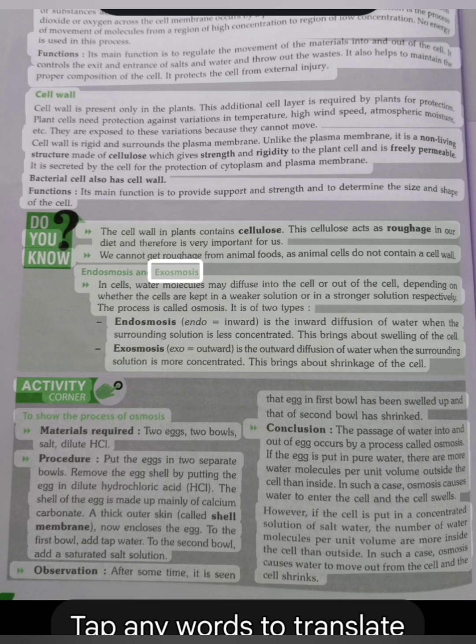Endosmosis and exosmosis. In cells, water molecules may diffuse into the cell or out of the cell, depending on whether the cells are kept in a weaker solution or in a stronger solution respectively. The process is called osmosis. It is of two types. Endosmosis (endo=inward) is the inward diffusion of water when the surrounding solution is less concentrated. This brings about swelling of the cell. Exosmosis (exo=outward) is the outward diffusion of water when the surrounding solution is more concentrated. This brings about shrinkage of the cell.